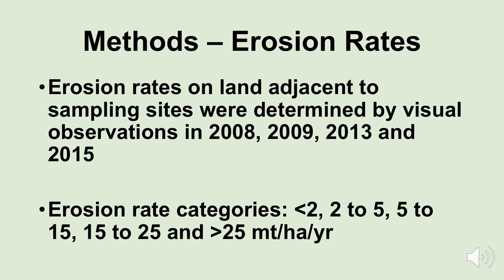We made these visual observations in 2008, 2009, 2013, and again in 2015. So even though the benthic macroinvertebrates were only evaluated once, the erosion rates were evaluated four times at each site. We came up with erosion rate categories that we evaluated visually using a guide — our erosion rate categories were: less than 2, 2 to 5, 5 to 15, 15 to 25, and more than 25 metric tons per hectare per year.